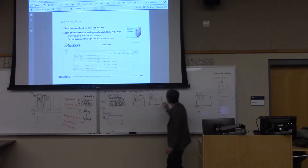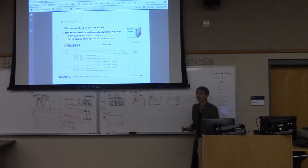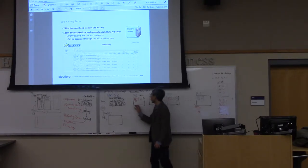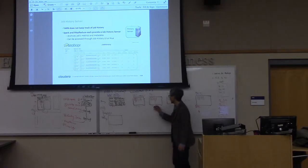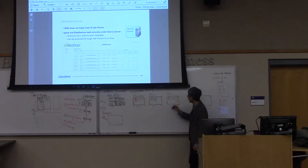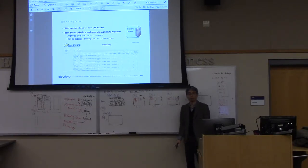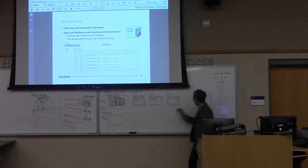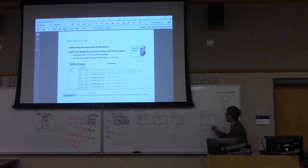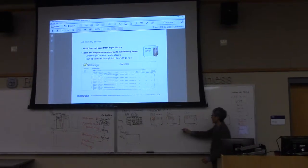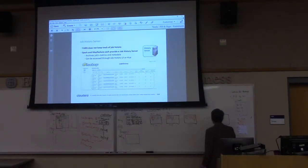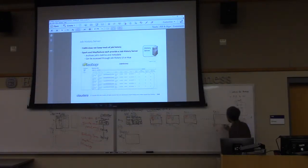One, two, three — they are in charge of each mapper. Each of them is in charge of block one. This one is in charge of this node. Then, the reducer task tracker will combine. They will inform to here, this one informs to here, and this one informs to here.